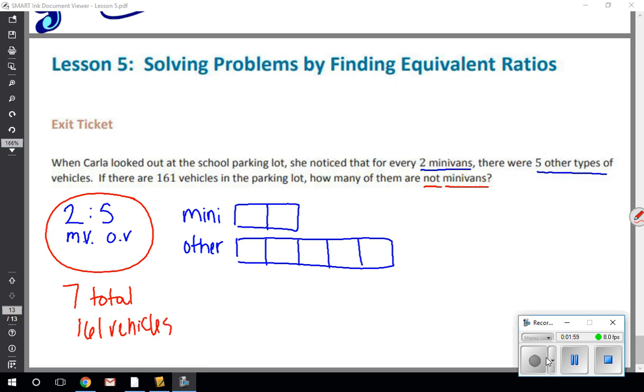So if here's two and here is five and total together is 161, I want to take 161 and divide it by seven to find out how much each one of these little squares equals.